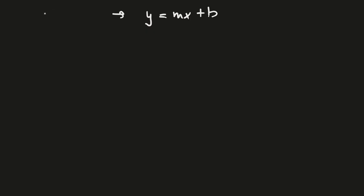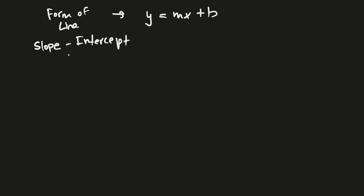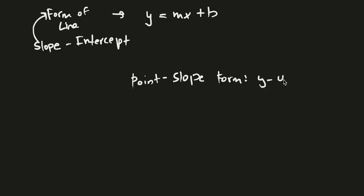Let's see what a line is. The general form of a line is y equals mx plus b. If you wanted to write a function for a line, this would be the form that the function would take. This specific form is called the slope-intercept form. This is just one of the forms. There's another form called the point-slope form, which I'll be covering in a separate video.